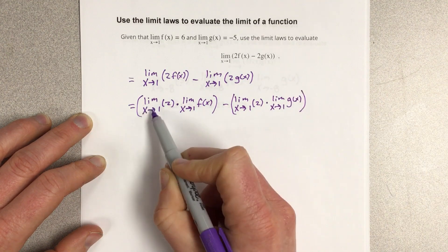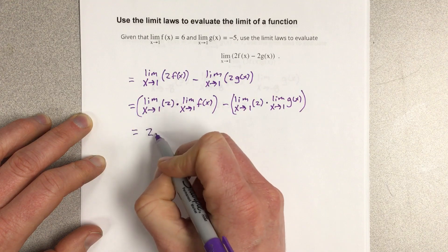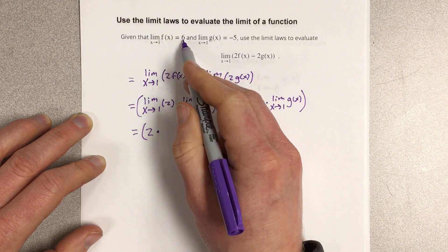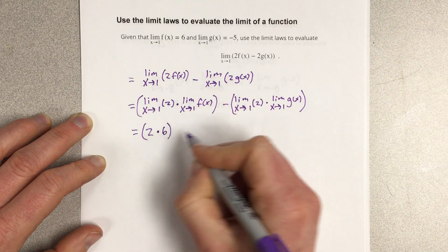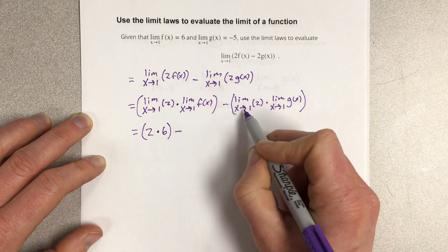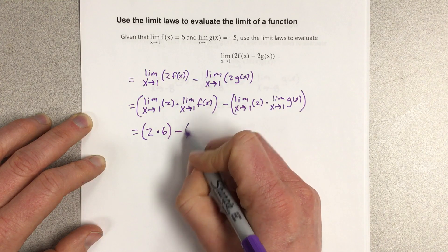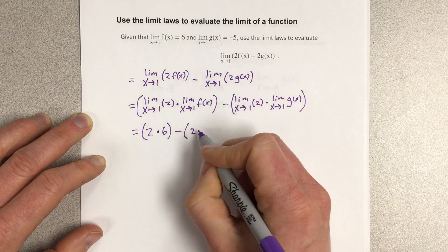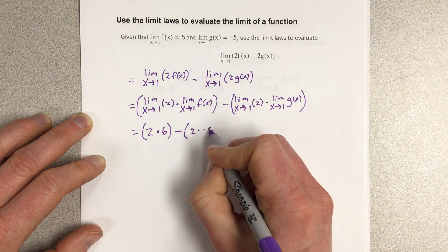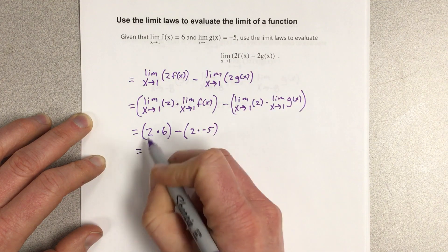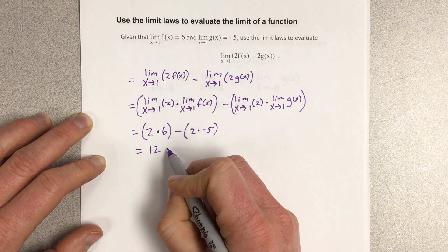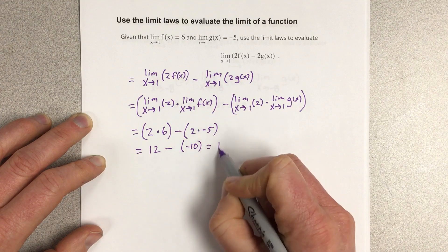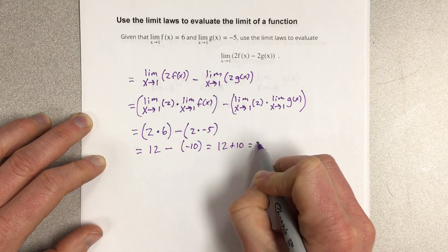Now the limit as x approaches 1 of f(x) is 6, the limit as x approaches 1 of 2 is 2, and the limit as x approaches 1 of g(x) we know to be negative 5. So that's times negative 5. Multiplying these you get 12 minus negative 10, which would be 12 plus 10, which is 22.